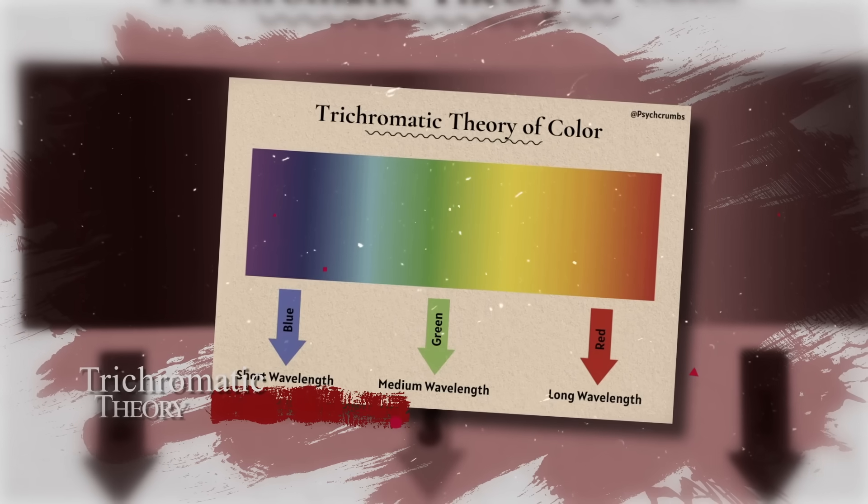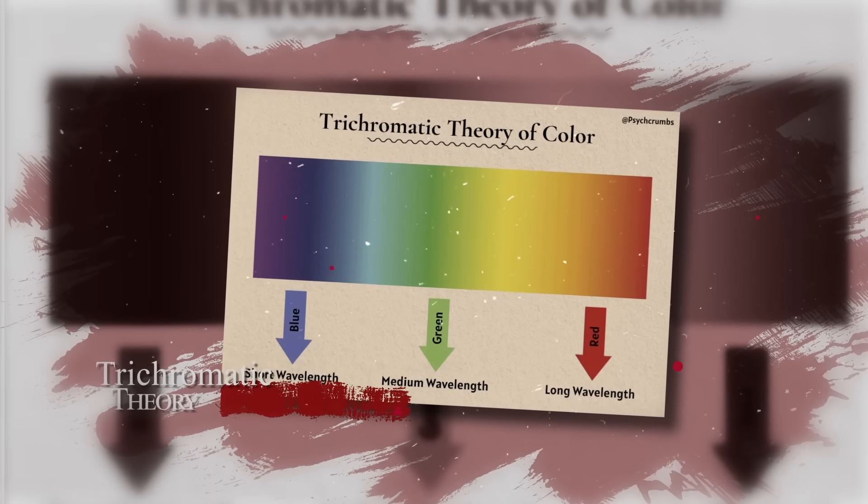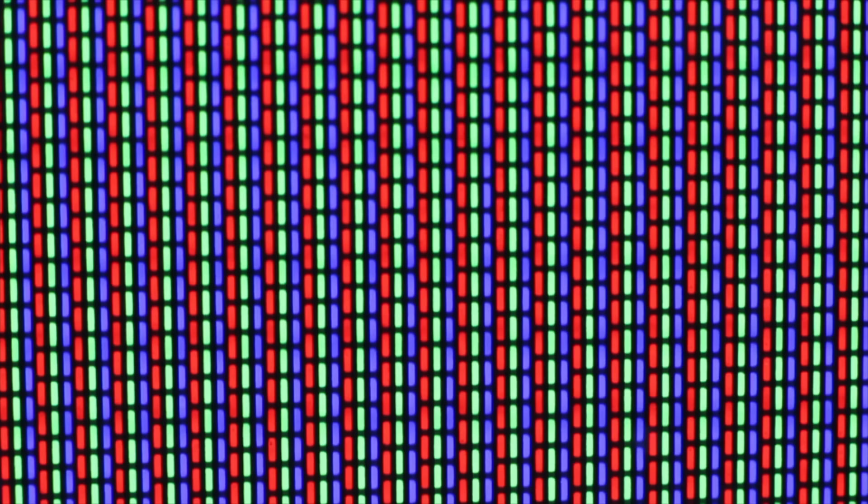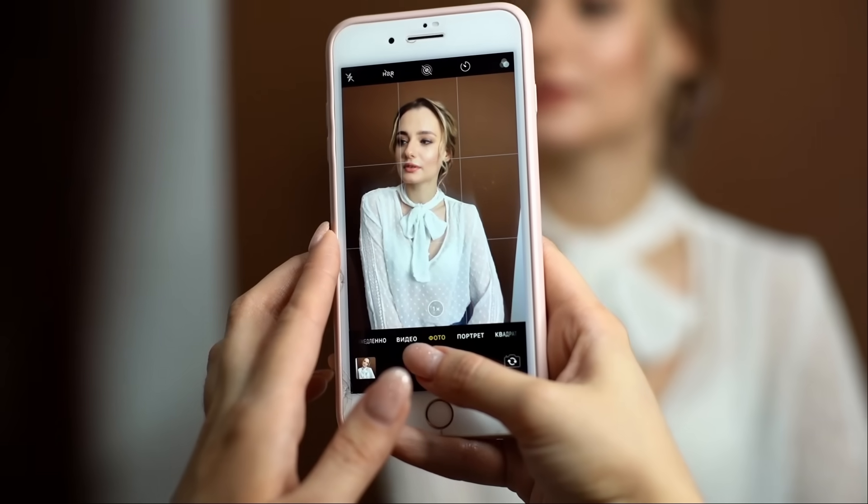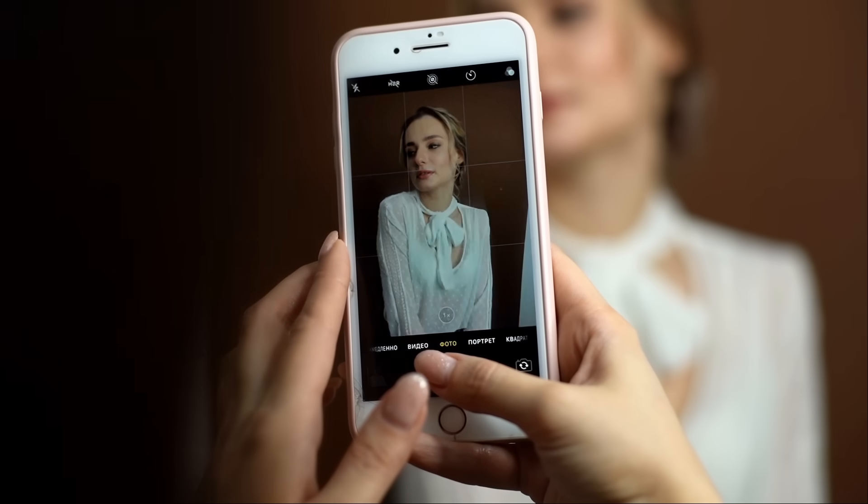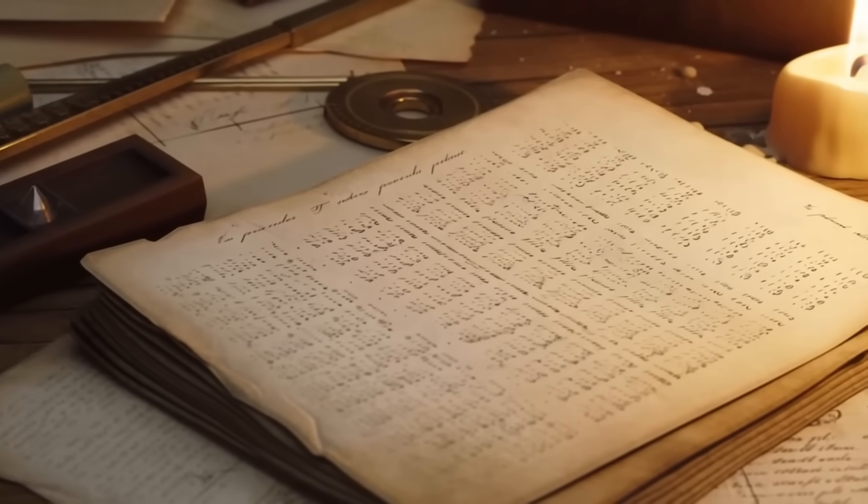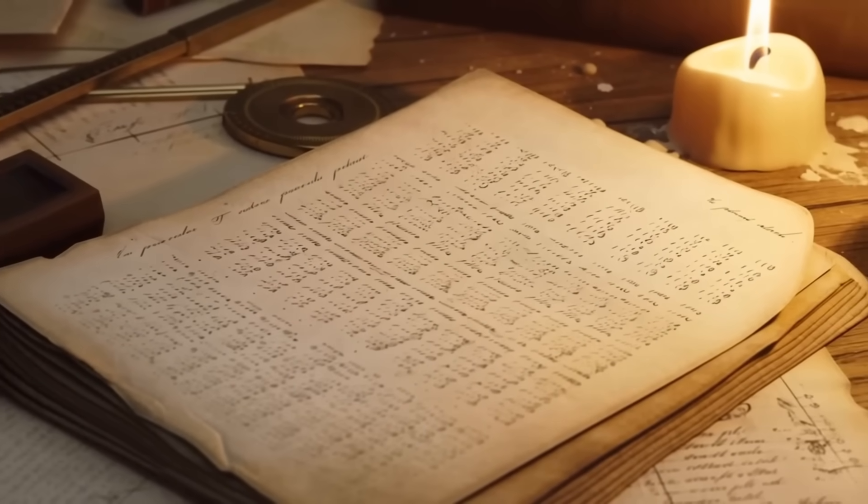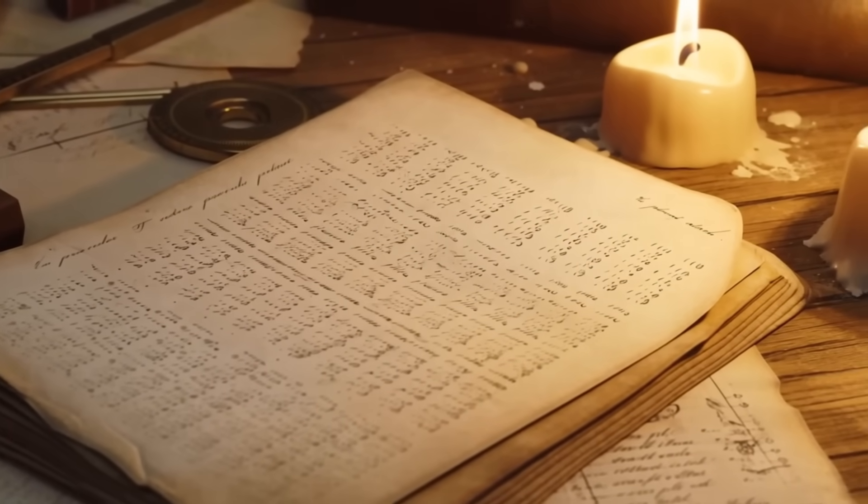Every phone screen, every television pixel, every color photograph, all echo Young's insight. Your screen glows in red, green, and blue because Thomas Young saw color that way first. For Young, beauty was not abstract. It was measurable, describable. Even color was a form of mathematics.